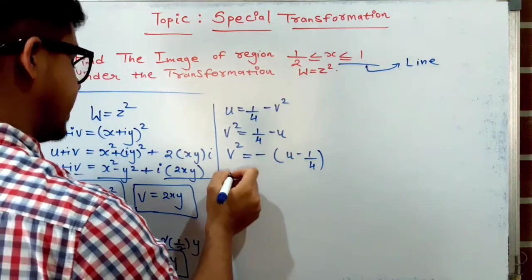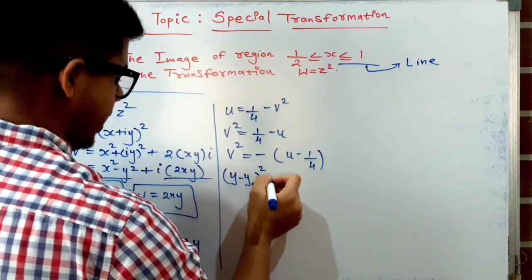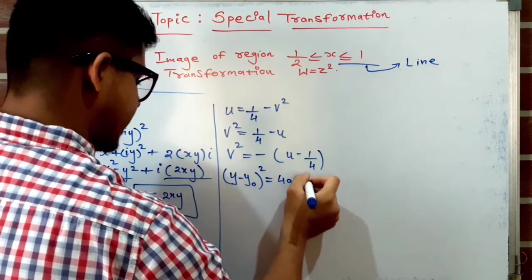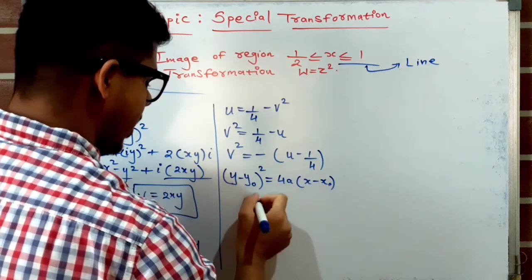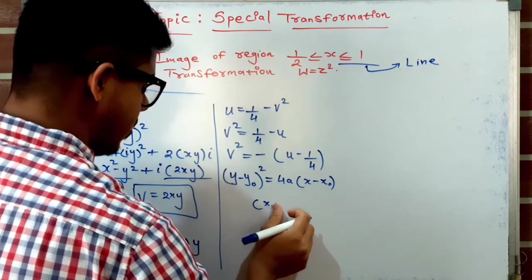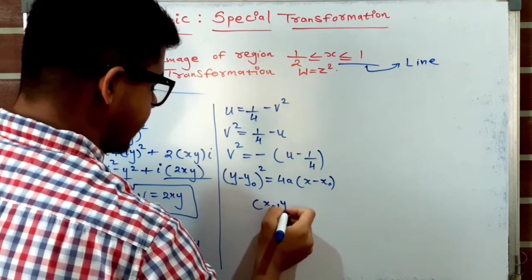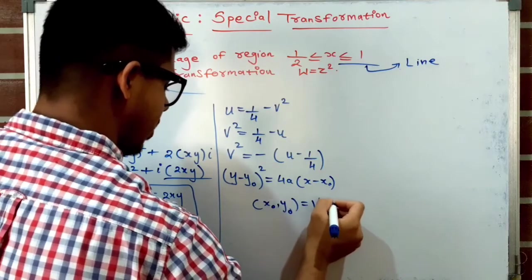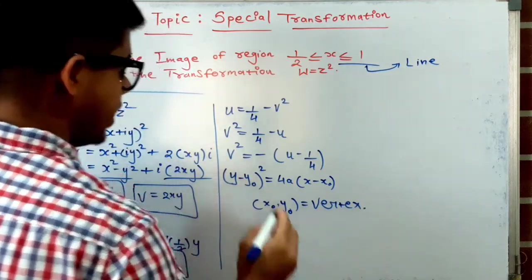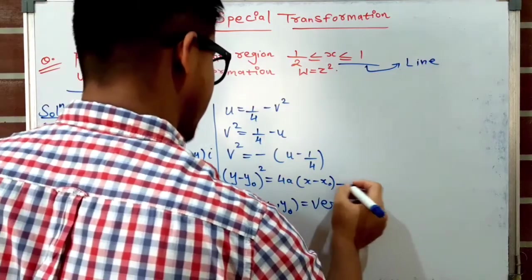The standard equation of a parabola is (y − y₀)² = 4a(x − x₀), where (x₀, y₀) is the vertex of the parabola. You must remember this standard equation.